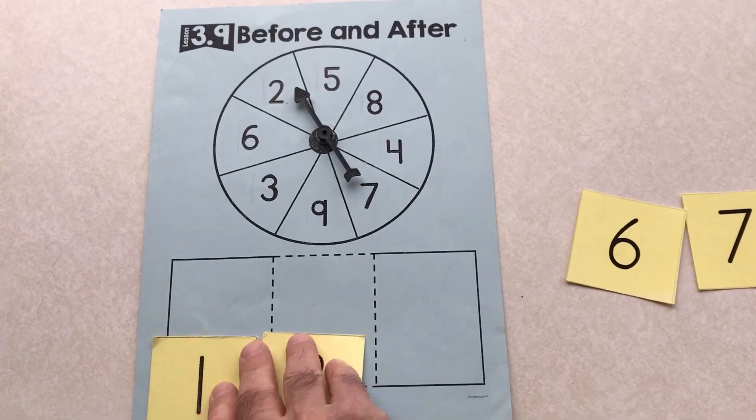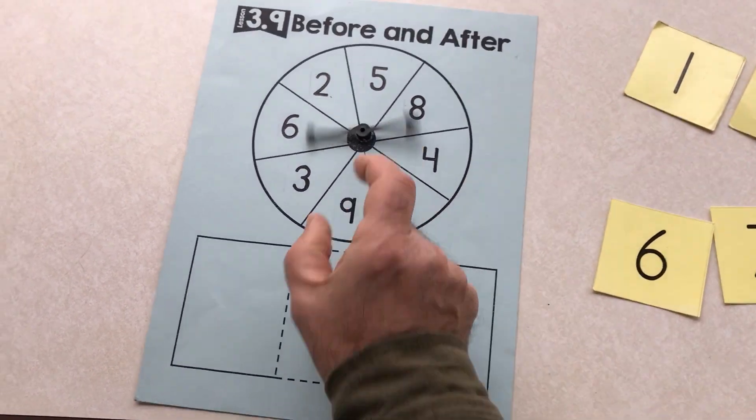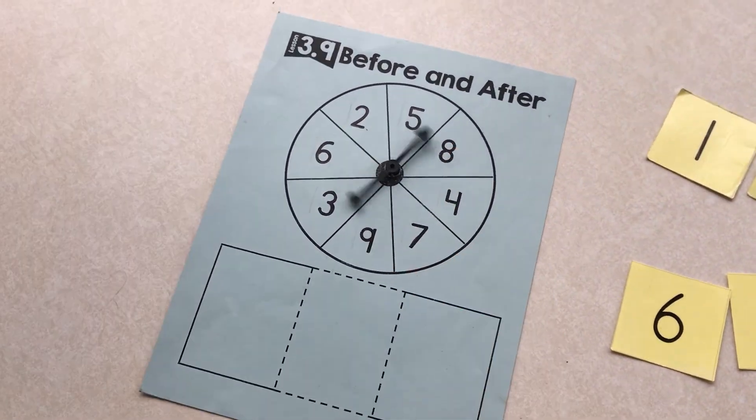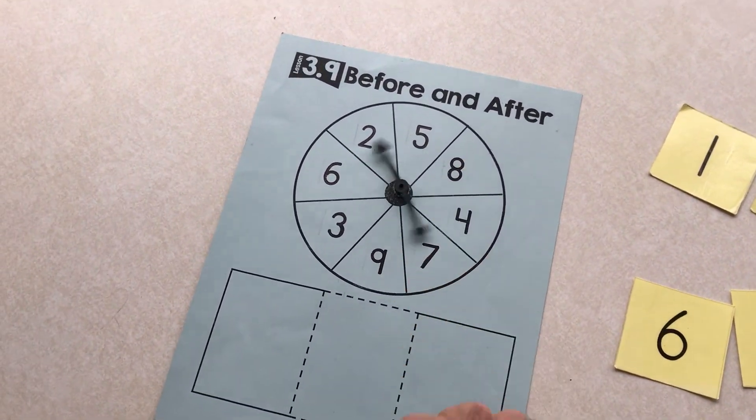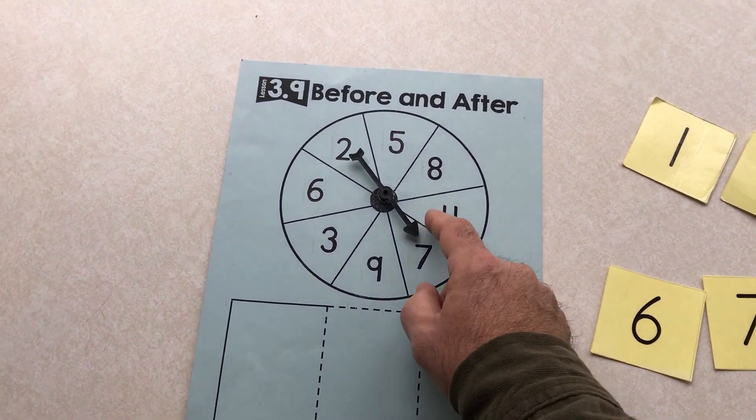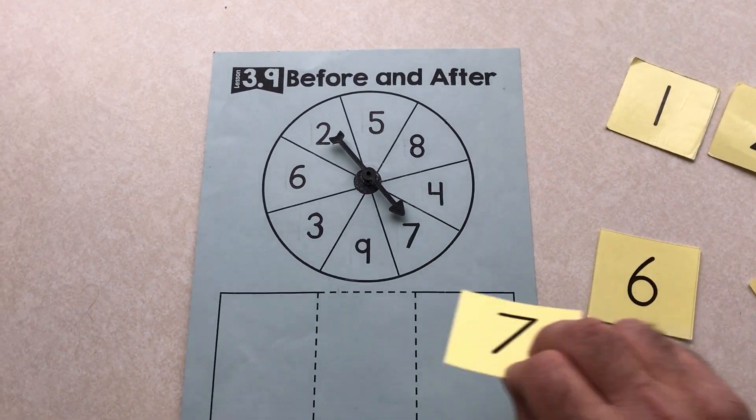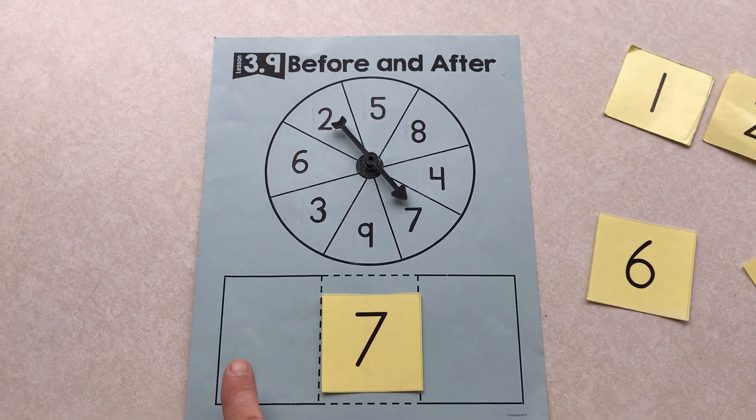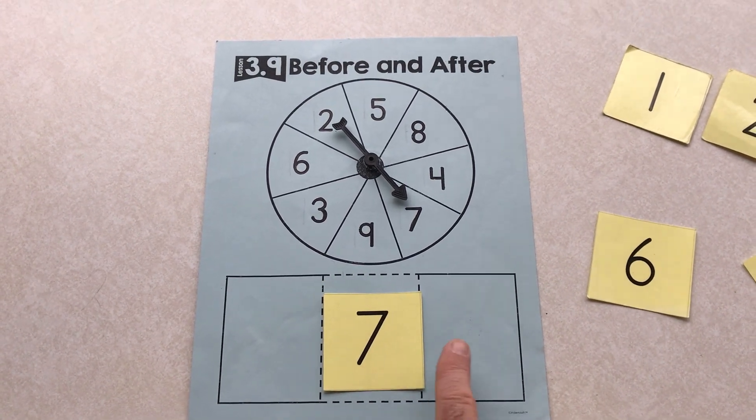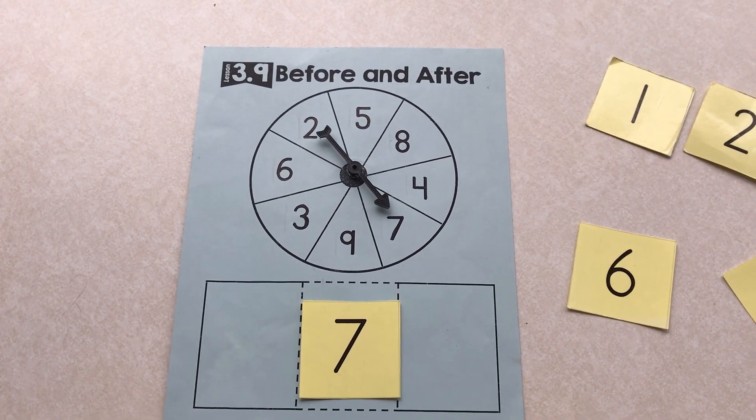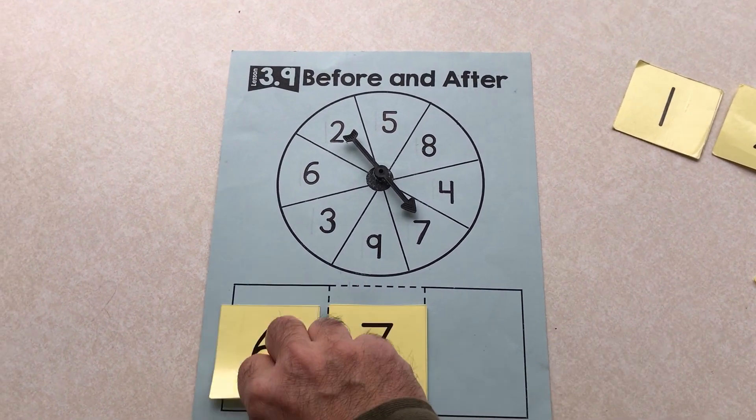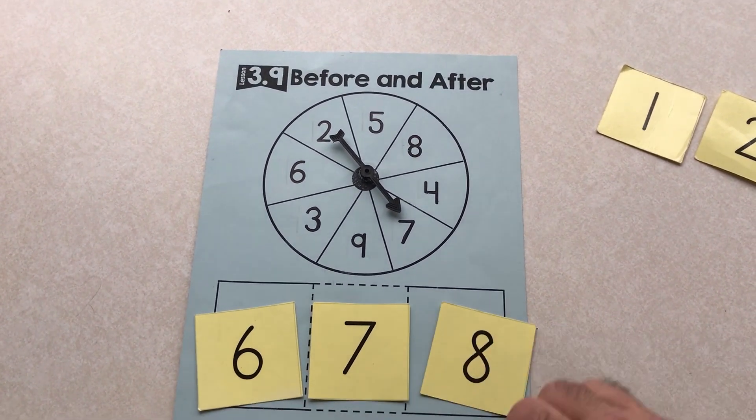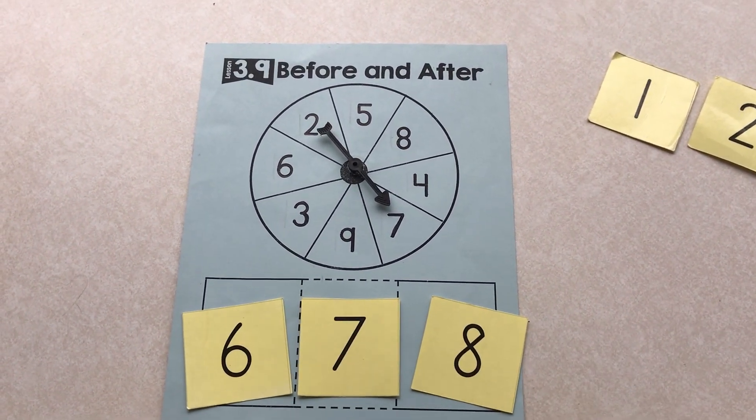We'll spin one more time. Seven. Seven's the number. You put the cards that come before and after. Thanks for playing.